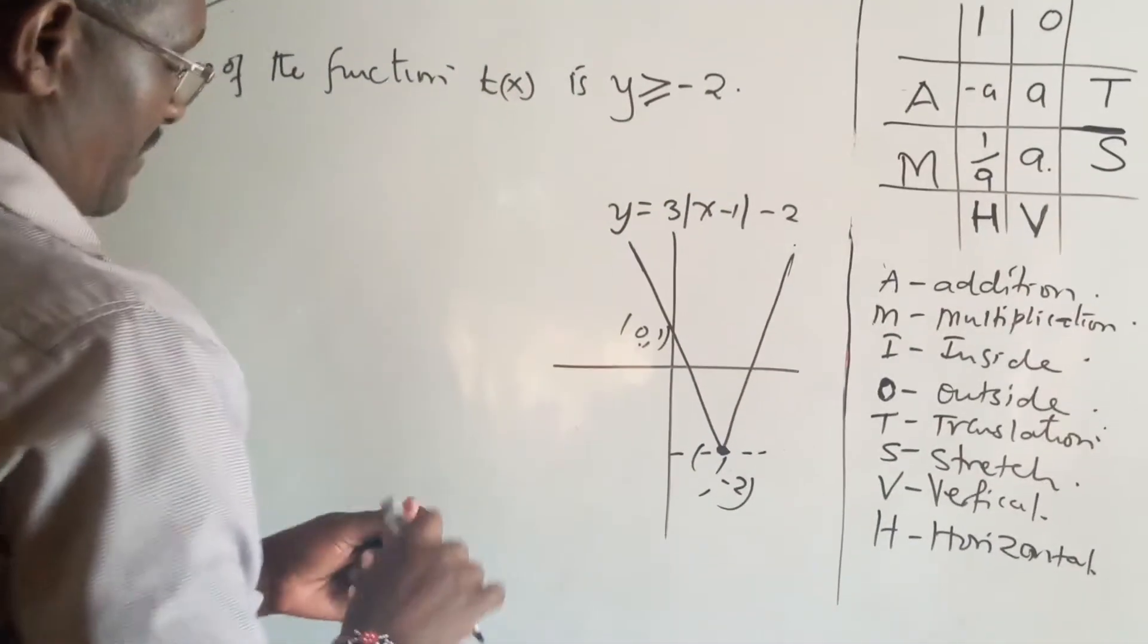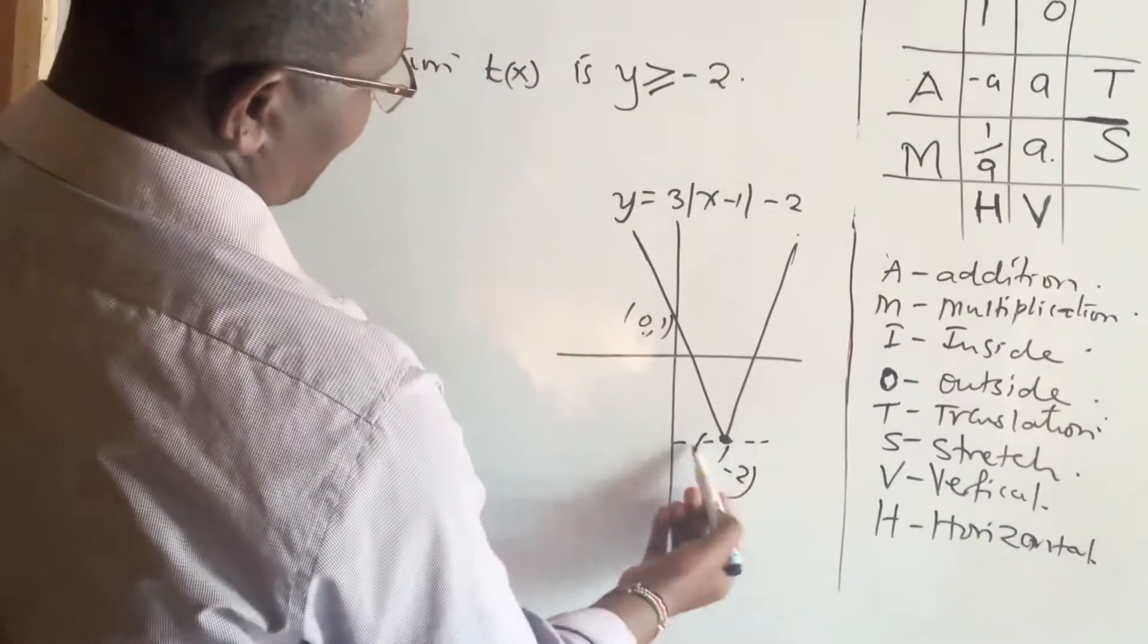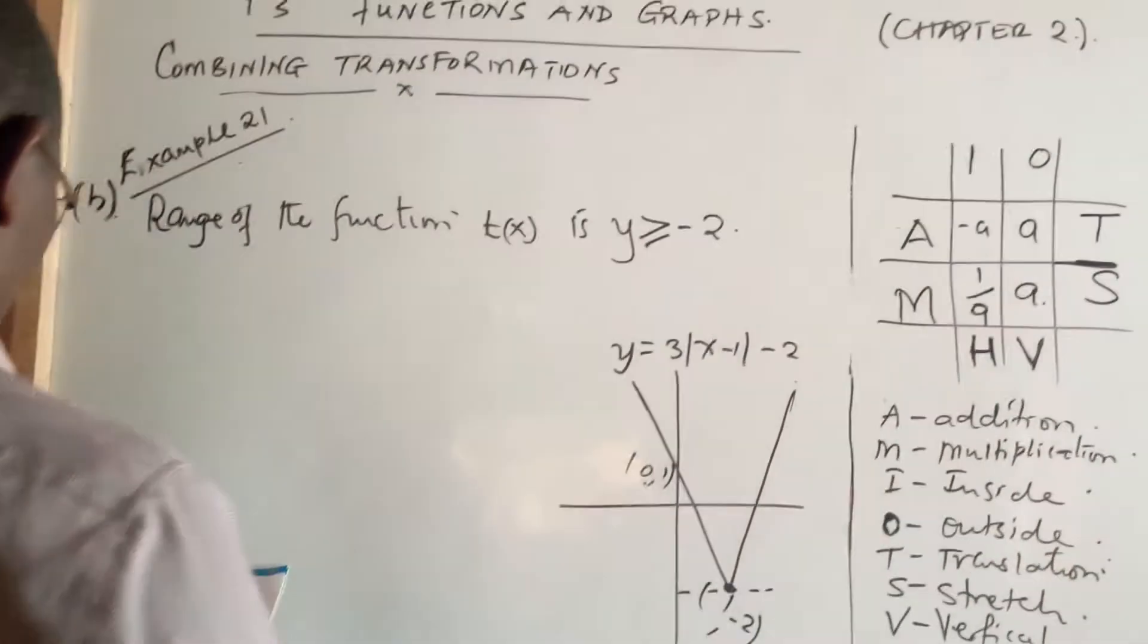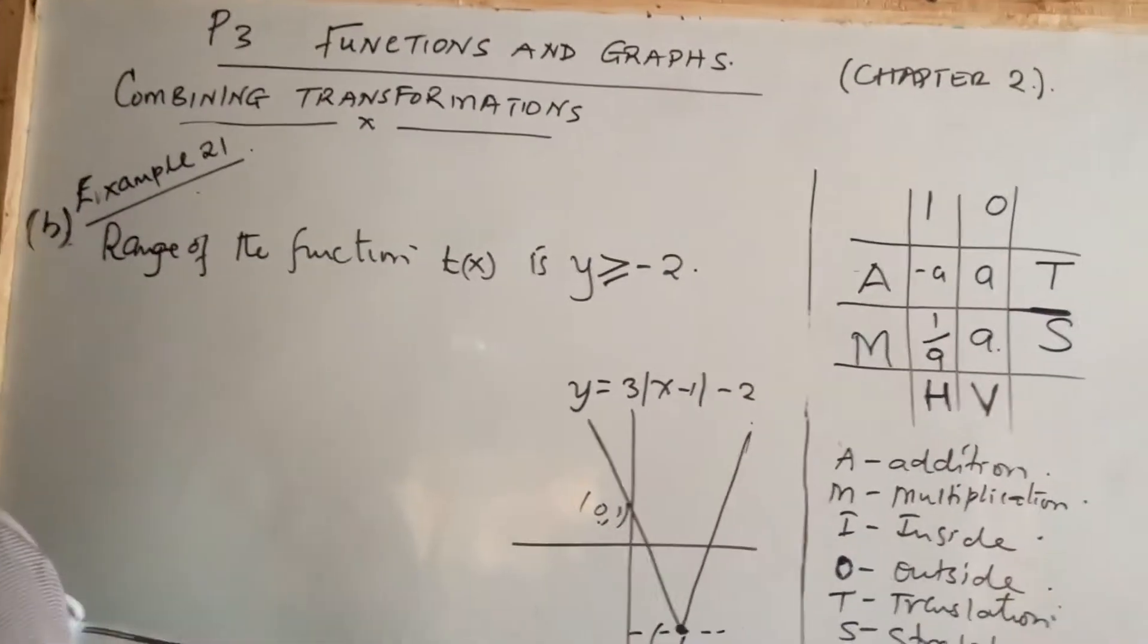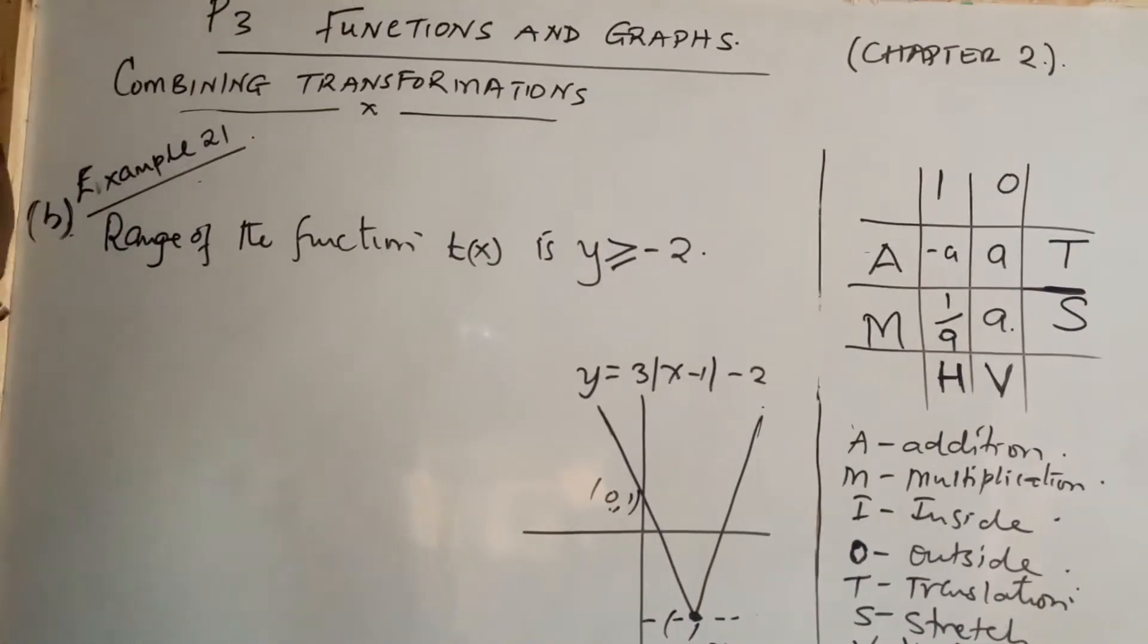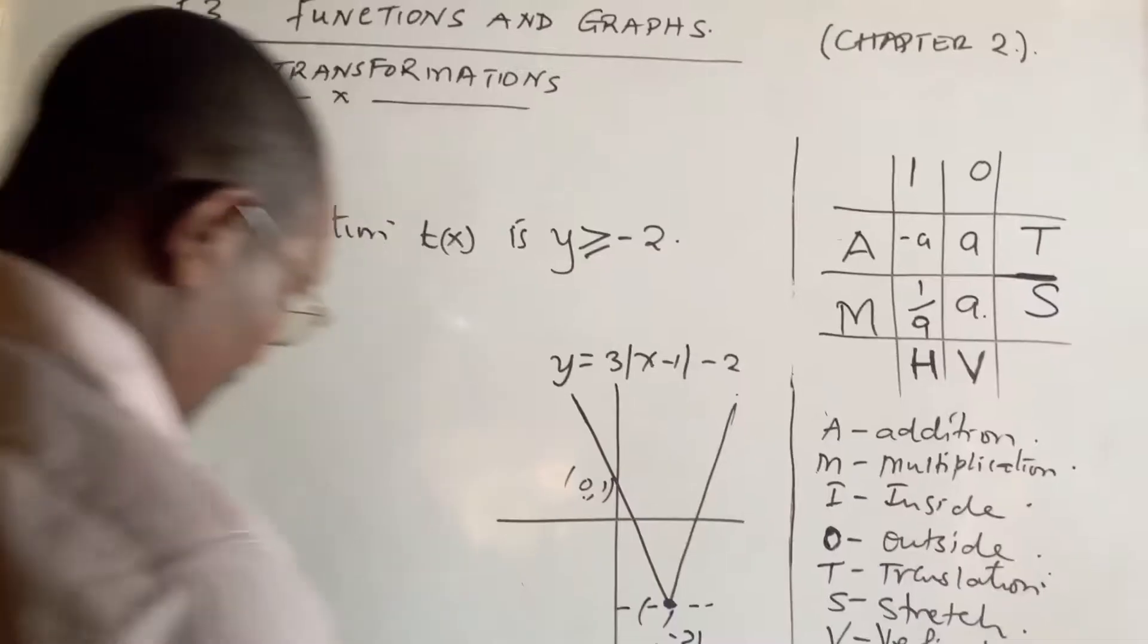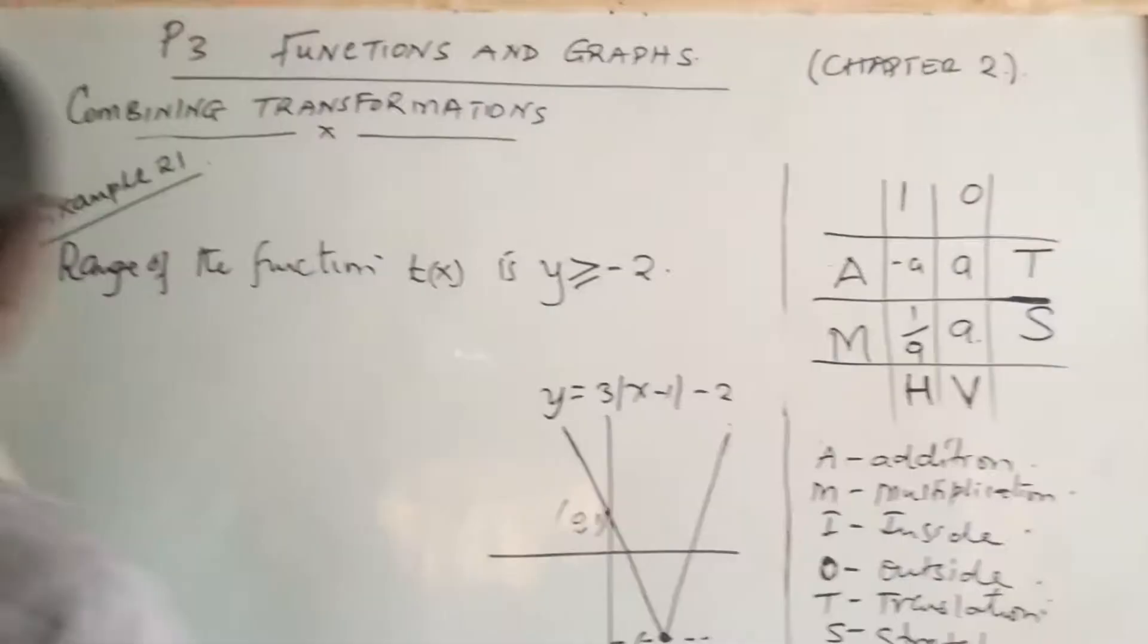Up there, we don't know what y can be, but at least we can tell that the least value of y is greater than or equal to -2. So that is the particular range.